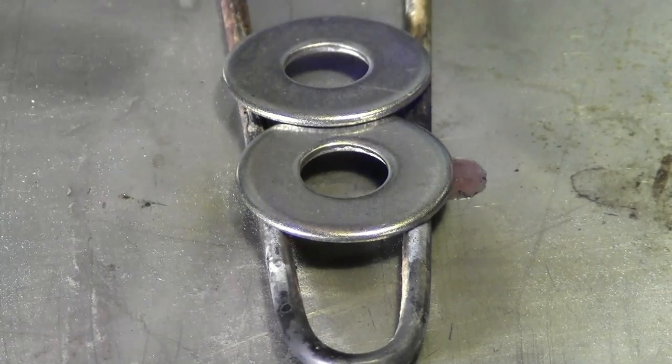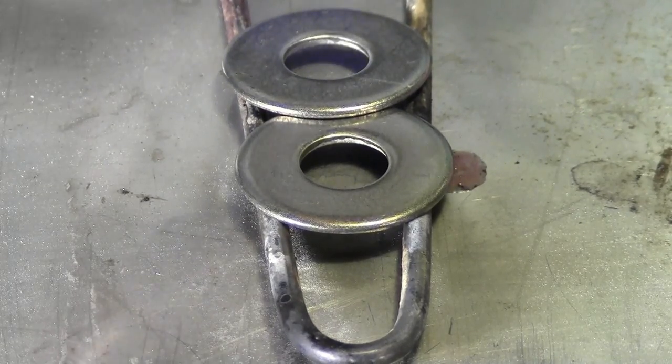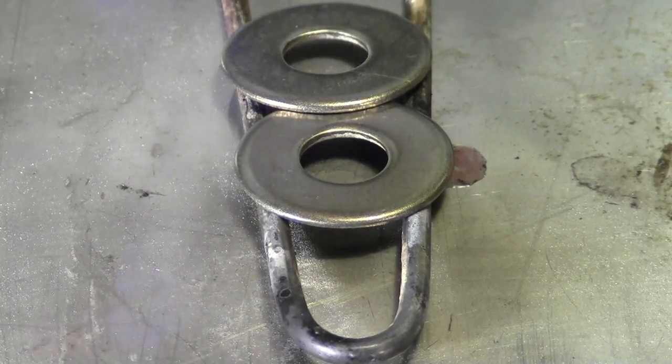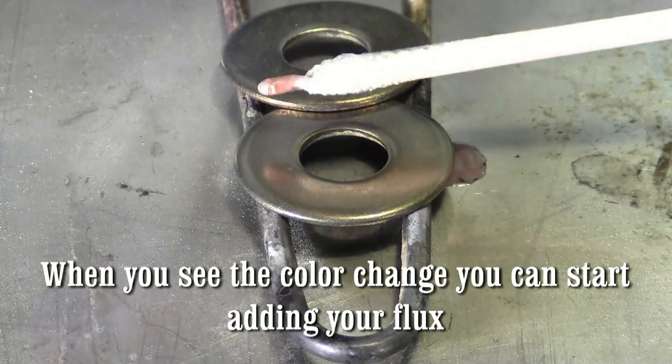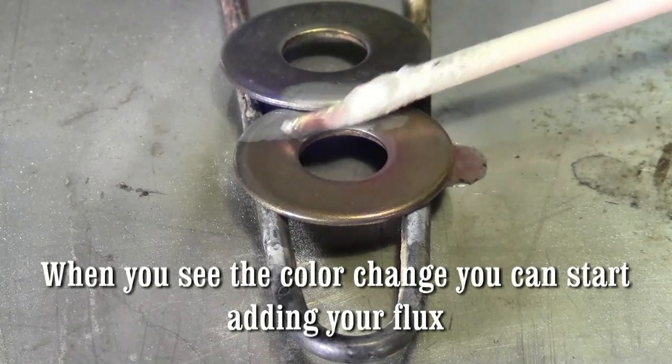All I'm looking for is this stainless to return to a dull red. I'm going to start painting my flux on. In terms of that yellow color, it's about 800 degrees.